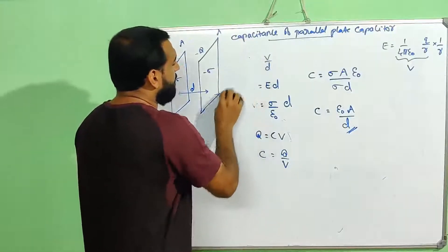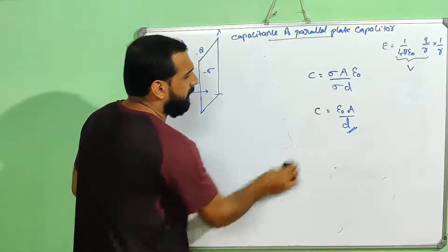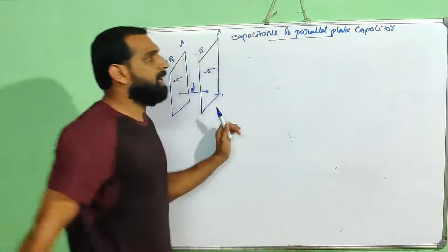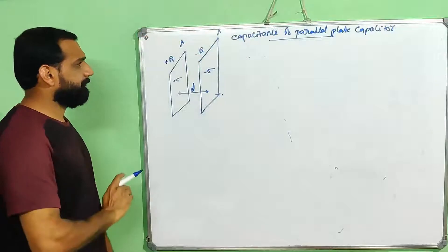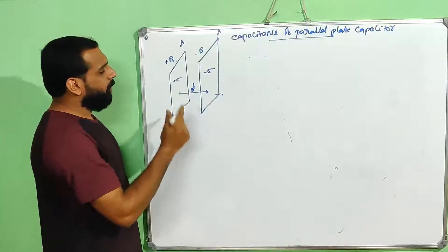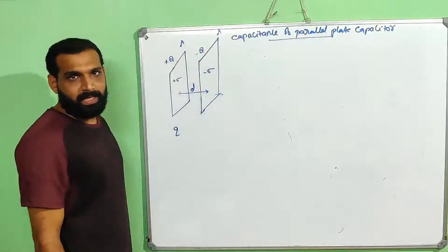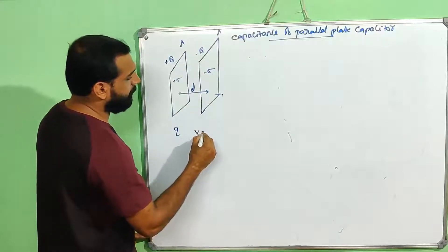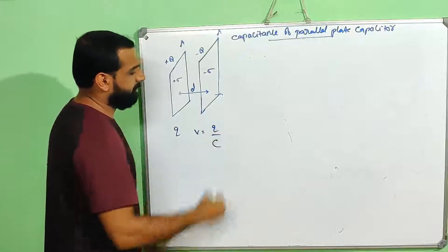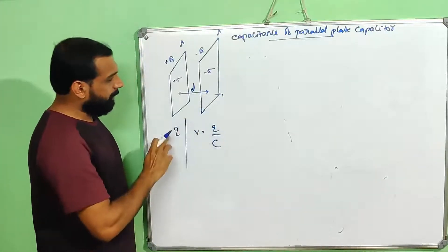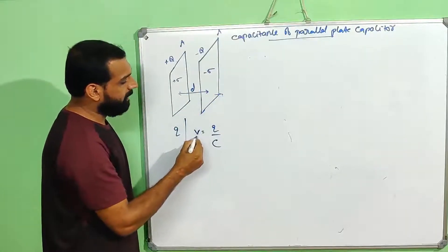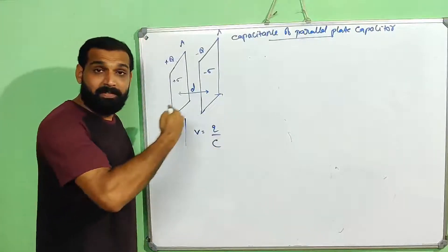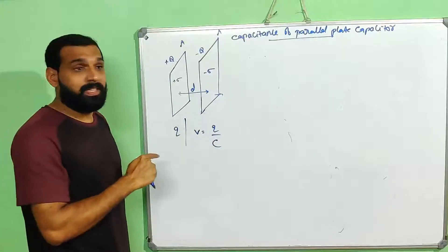This expression gives the capacitance of a parallel plate capacitor: C equal to epsilon 0 A by D. Now the last item is the expression for energy stored in a parallel plate capacitor. We have a Q charge, and Q charge is transferred and develops a potential V equal to Q by C.